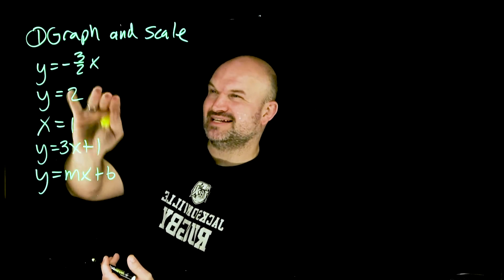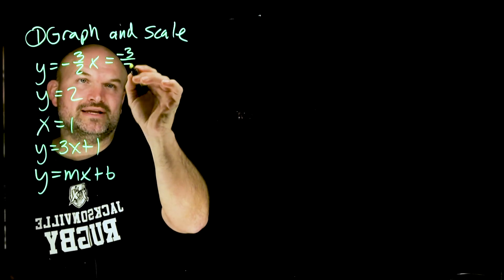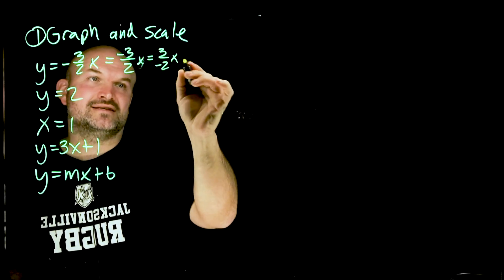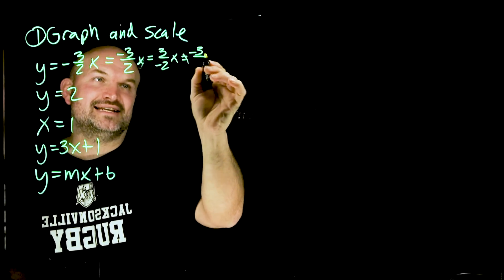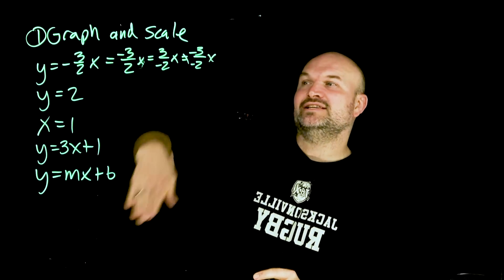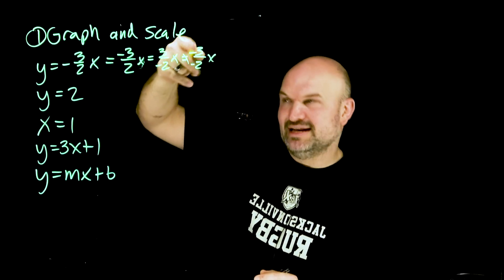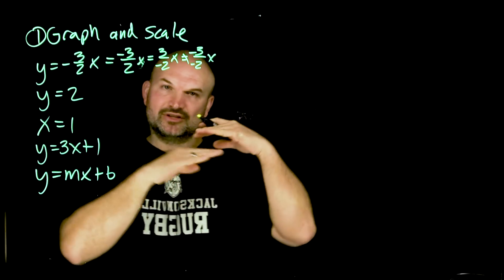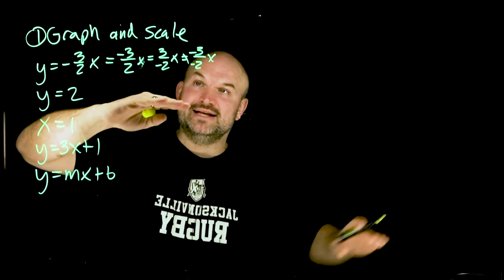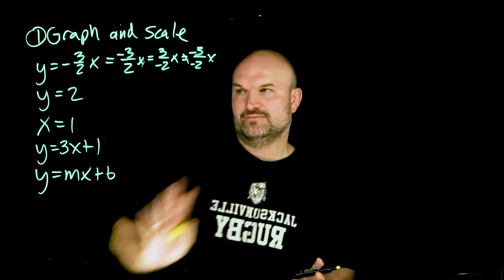The first example where students make mistakes is when we have a negative slope. You can think of it as negative 3 over 2x, or as 3 over negative 2x, but you cannot think of it as negative 3 over negative 2x. This negative needs to go either in the numerator or in the denominator — not both. If you're negative, you can either go down and to the right or up and to the left. That is a very big mistake students will make.